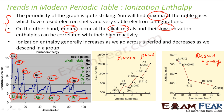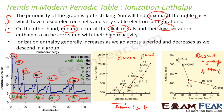If you go down a group, ionization enthalpy decreases, because the atomic size increases. This pattern is similar to the atomic size trend. As atomic size increases going down a group, it is easier to lose electrons. Going across a period, atomic size decreases, so it becomes more difficult to remove electrons because the nucleus has more control over the electrons.